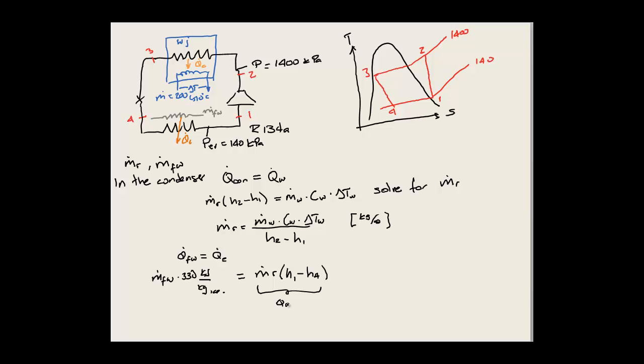This fresh water Q will be the mass flow rate of fresh water times the energy we need to remove from ice, which is 333 kJ per kg of ice. This equals the mass flow rate of refrigerant, which we already know, times the enthalpy difference in the evaporator. We can solve for mass flow rate of fresh water. We can notice the only unknowns are H1, H2, H3, and H4, which we can get from our tables.